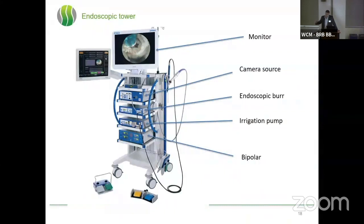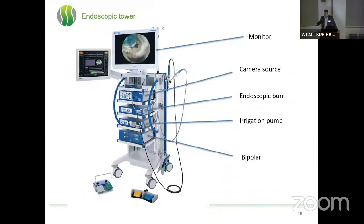We have different scopes. The scopes differ in angulation, size, length, and indication. The bigger the scope, the more you can decompress. The smaller the scope, the more you may be able to move inside the spinal canal.